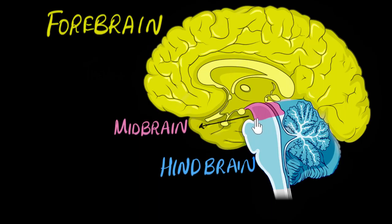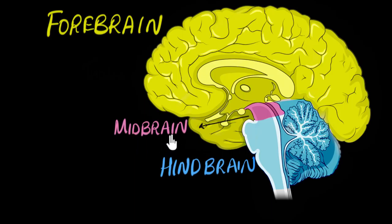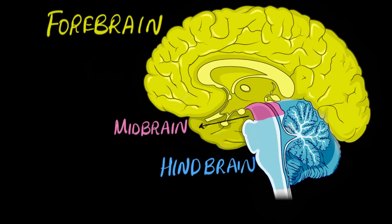The midbrain is actually the beginning part of the brain stem. The brain stem is on top of which the forebrain sits, and it connects the forebrain to the spinal cord — this continues as the spinal cord. So the beginning section of the brain stem is what we call the midbrain, and the later section of the brain stem is part of the hindbrain. The hindbrain also consists of this section, which itself looks like a mini brain all by itself.